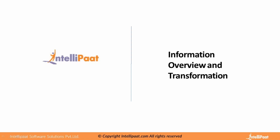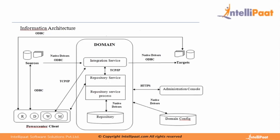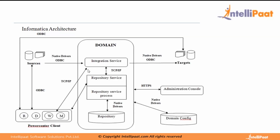Before starting with the architecture, you need to install the Informatica server and client in your systems. You'll have to work in parallel on lab activities and demos. You'll need to install a database first. The server components include the domain, services, and repository. Client components include the repository manager, designer, workflow manager, and monitor.